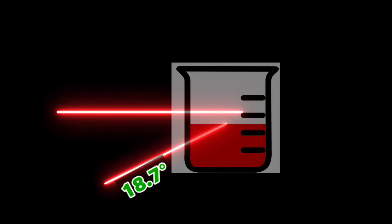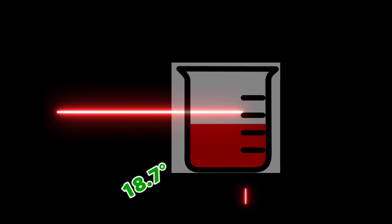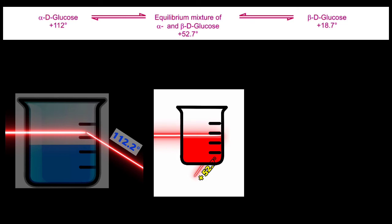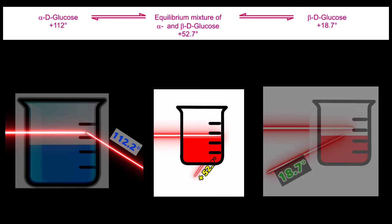In the same way, when light is passed through beta-D-glucose solution prepared using the beta-D-glucose crystals, initially the solution shows a rotation of plus 18.7 degrees, which also gradually changes with time to a constant rotation of 52.7 degrees. Here also beta form changes to alpha and vice versa to reach the equilibrium state where the rotation is fixed or constant, that is 52.7 degrees.